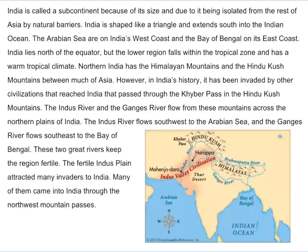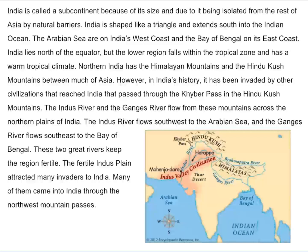India is called a subcontinent because of its size and due to it being isolated from the rest of Asia by natural barriers. India is shaped like a triangle and extends south into the Indian Ocean. The Arabian Sea is on India's west side and the Bay of Bengal on its east coast. India lies north of the equator but the lower region falls within the tropical zone and has a warm tropical climate. Northern India has the Himalayan mountains and the Hindu Kush mountains between much of Asia. However, in India's history it has been invaded by other civilizations that reached India by passing through the Khyber Pass in the Hindu Kush mountains.